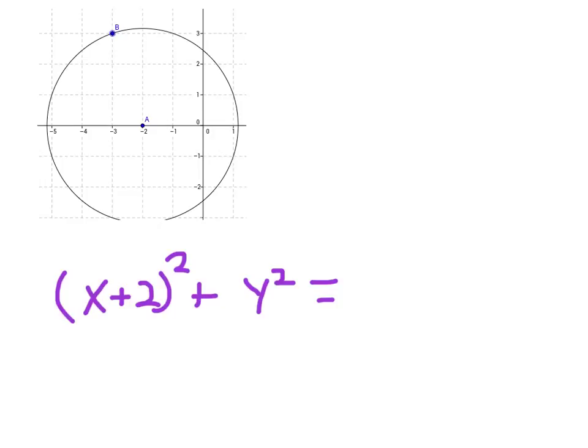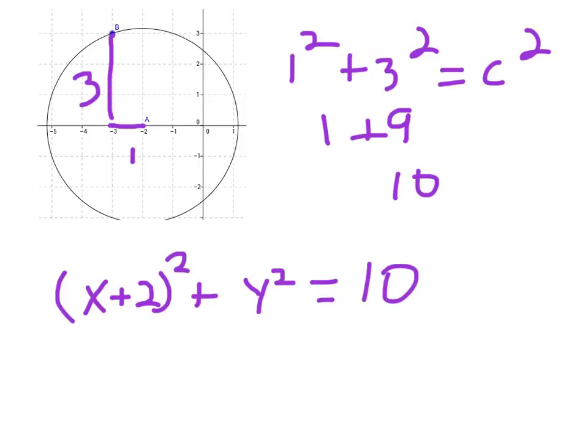Over, we're going to go over 1, up 3, 1 squared plus 3 squared equals c squared, 1, 9, 10. Boom, 10 goes in there. Hope that's what you got. All right.